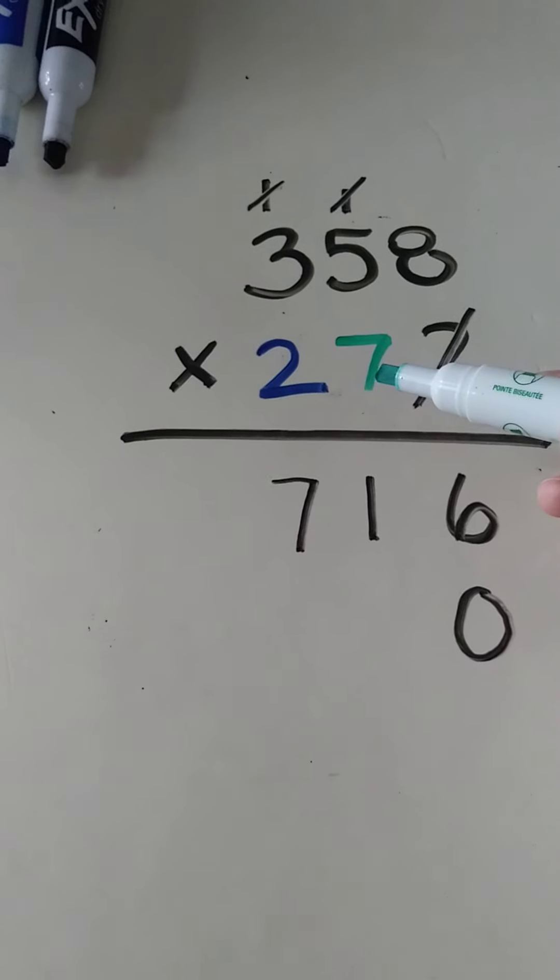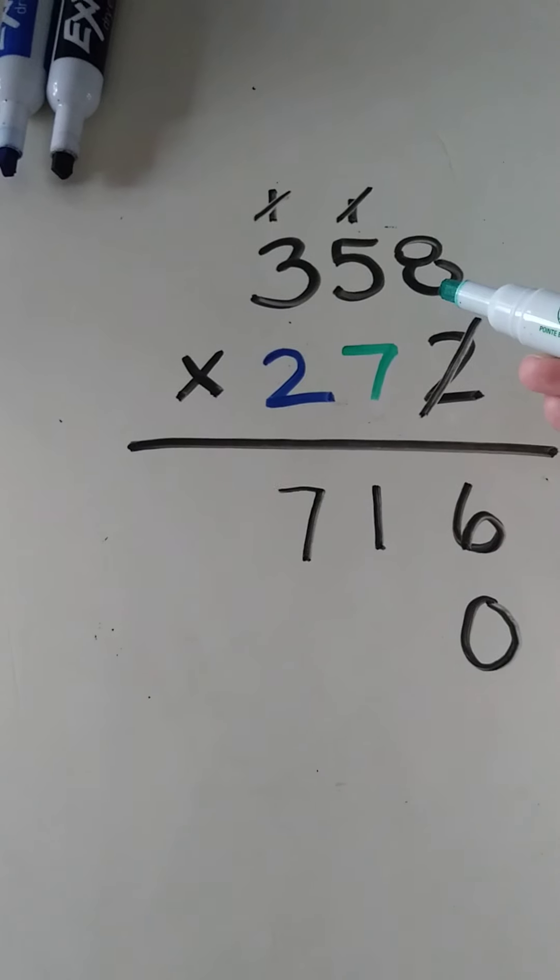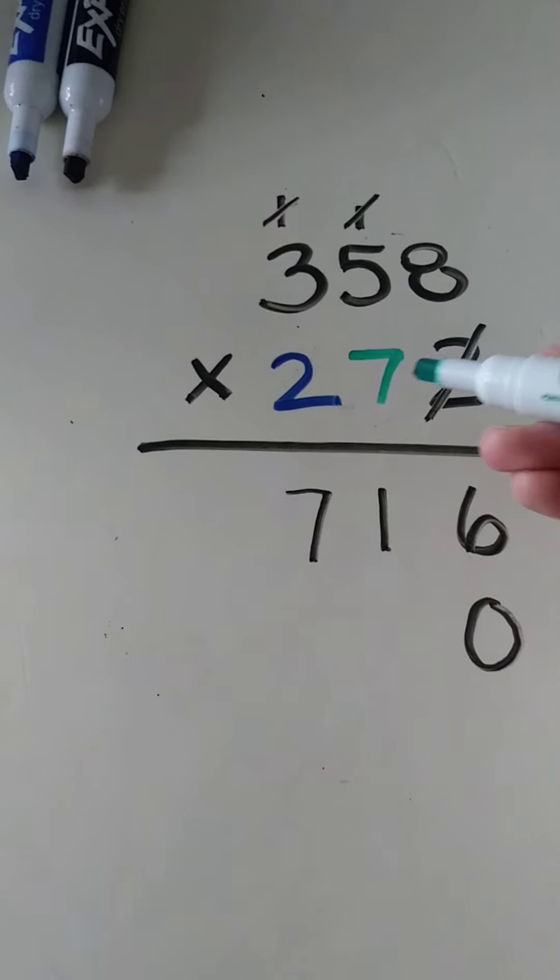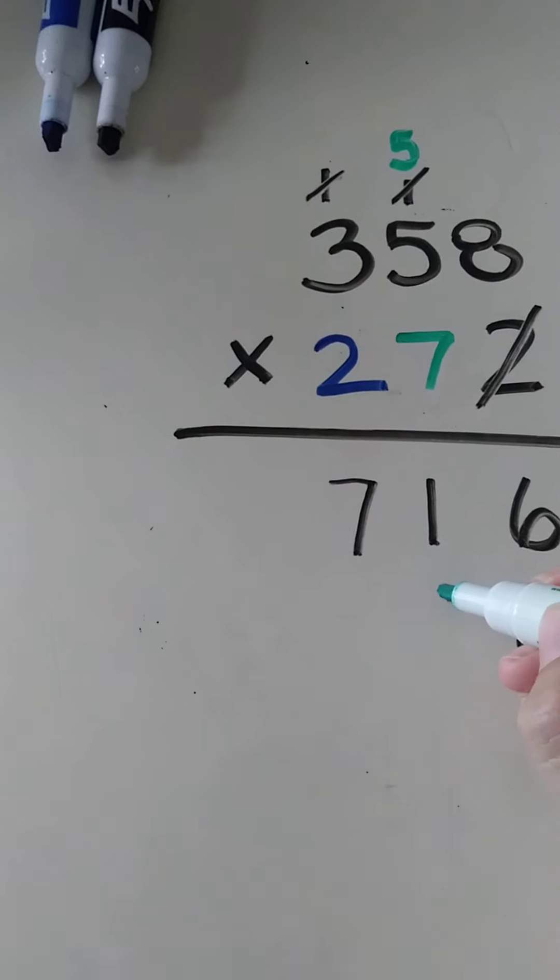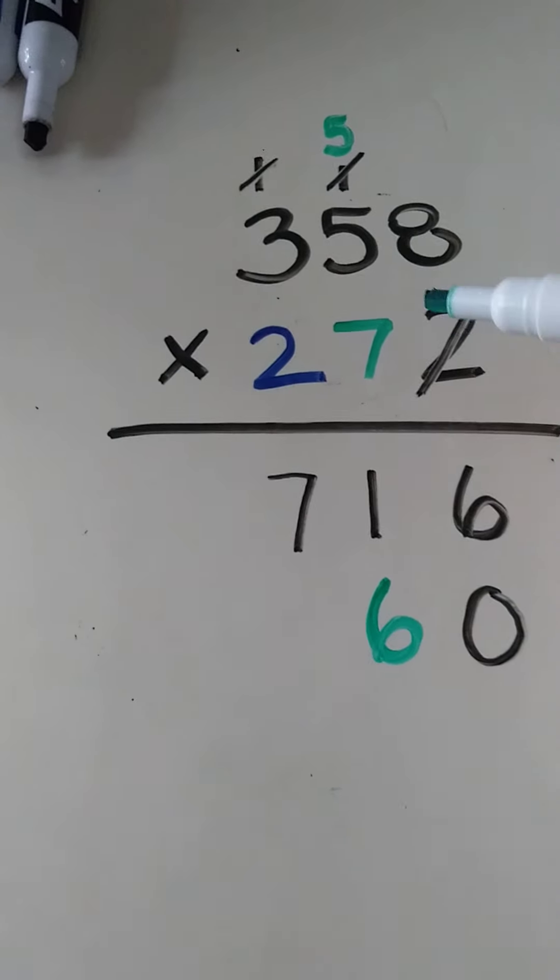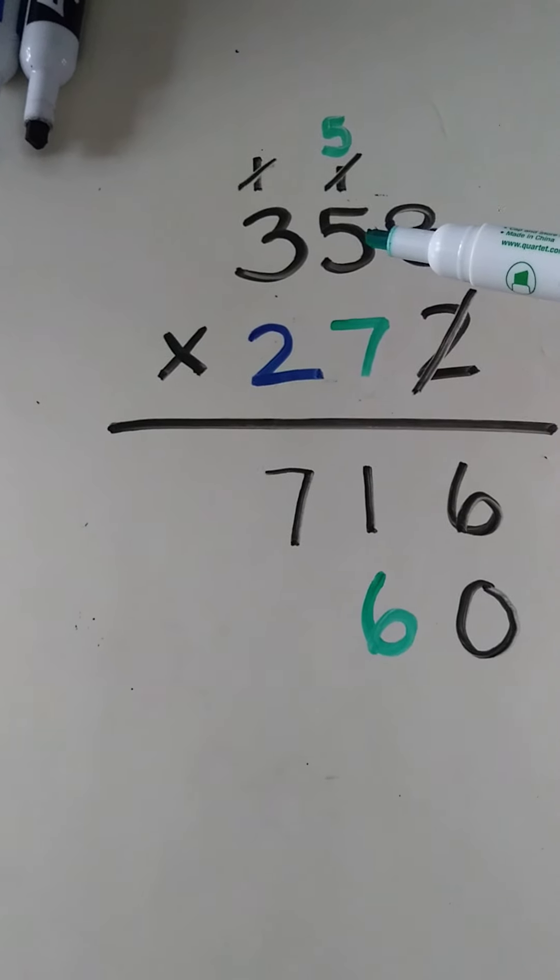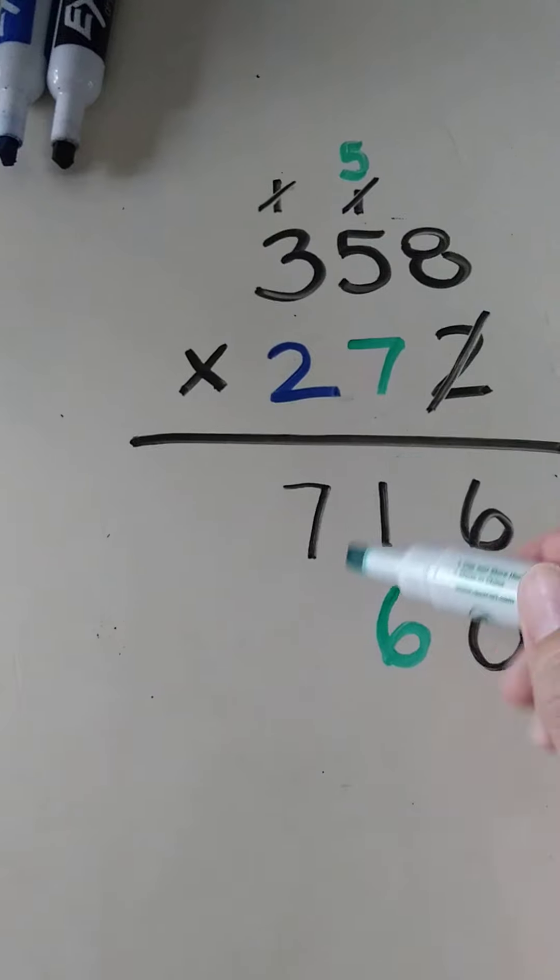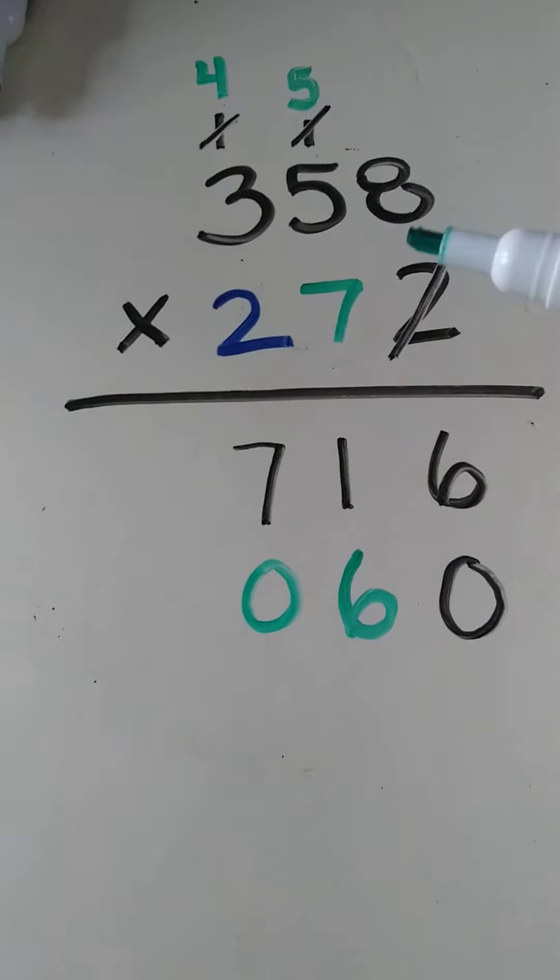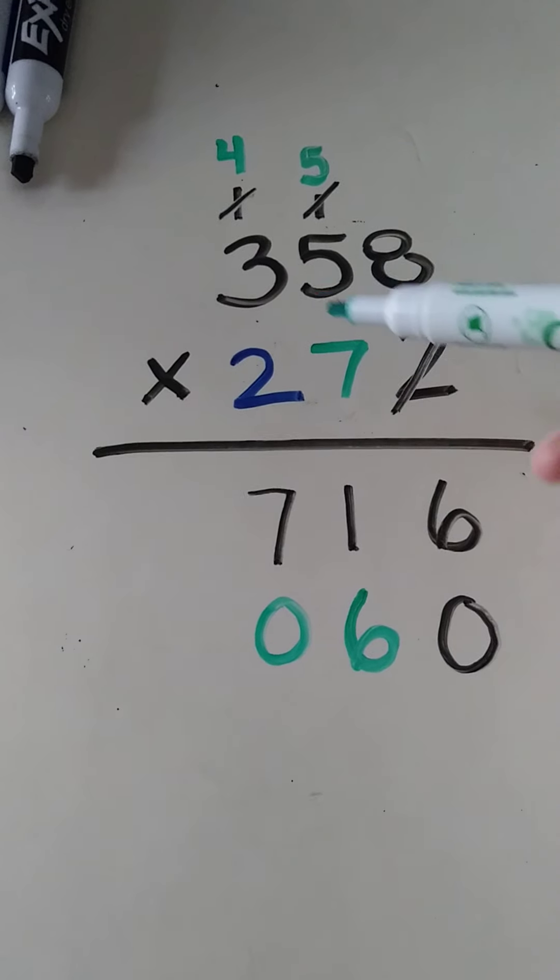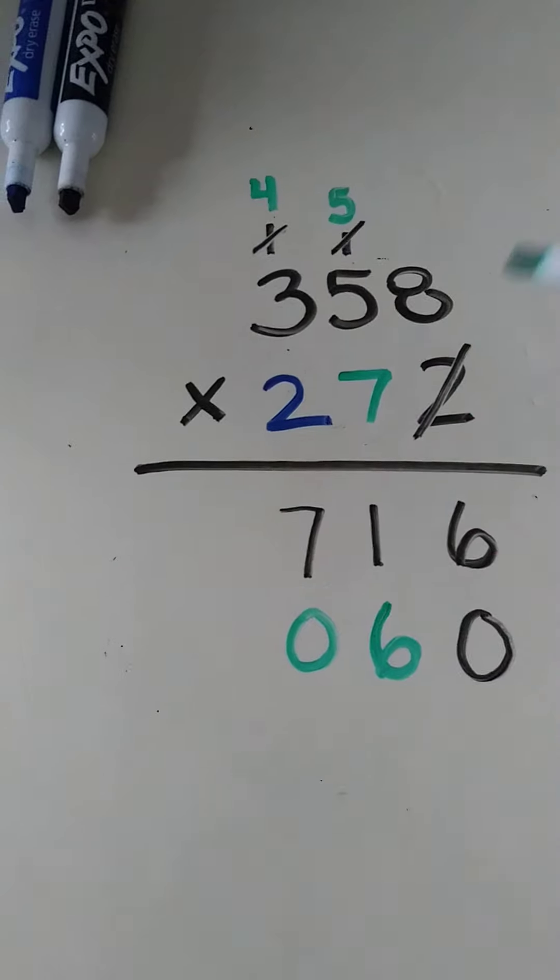So here we go. We're going to start multiplying the tens place. So we're going to do 7 times 8, which is 56, and I put my numbers in the same position. So 56: 5 up here and 6 down here. Then I'm going to do 7 times 5, which is 35, plus 5, which is 40. And then we're going to do 7 times 3, which is 21, plus 4, which is 25.